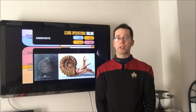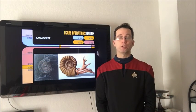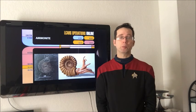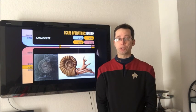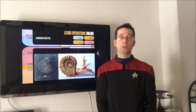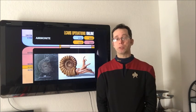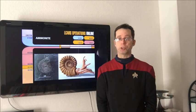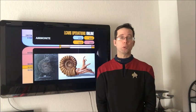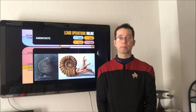Here we have an ammonite fossil that formed in a shale deposit approximately 220 million years ago. While ammonites come in a variety of shapes and sizes, this particular example is of the smaller spiral shell variety, approximately 4 centimeters in diameter.